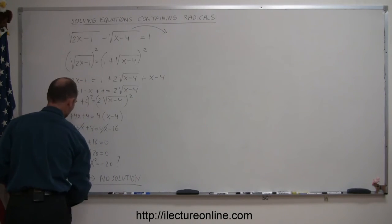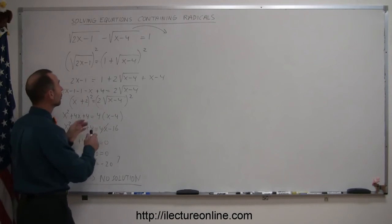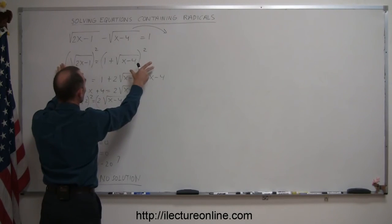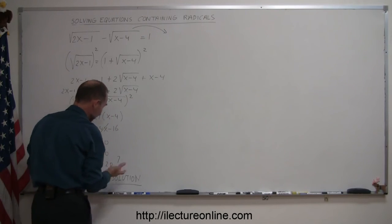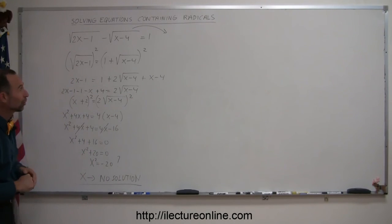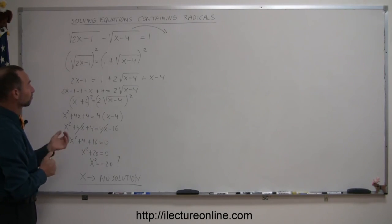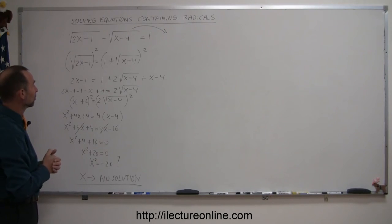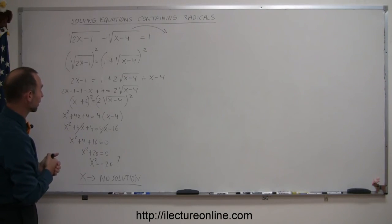This particular problem has no valid solution and nothing to check. The same technique is always followed: separate the radicals, square both sides, end up with a single radical, isolate it, square both sides again. In this case, no solution was found. Hopefully this shows you how to solve equations containing radicals. If you have trouble, go back to the videos and check again. Good luck!